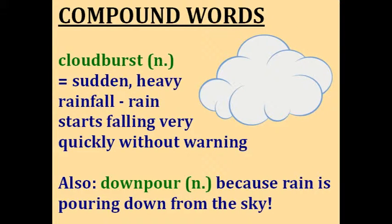Cloudburst. You probably already know that this is a cloud, and the word burst means to explode. So a cloudburst is a sudden heavy rainfall when rain starts falling very quickly without warning — it's like the cloud exploded with rain. Another compound word for heavy continuous rain is a downpour, because rain is just pouring down out of the sky.